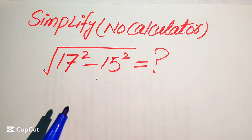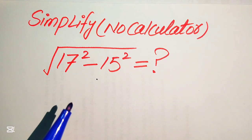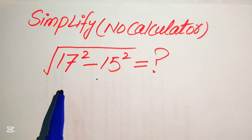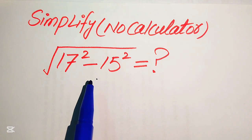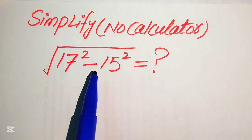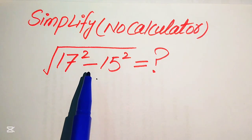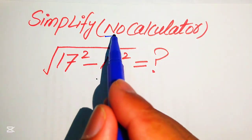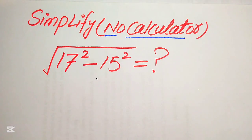Hello everyone, today I want to show you how to simplify this algebraic expression. We have the square root of 17 squared minus 15 squared, and we simplify this into the lowest form. Note that a calculator is not allowed in this problem, meaning we will show all of the working on this paper.